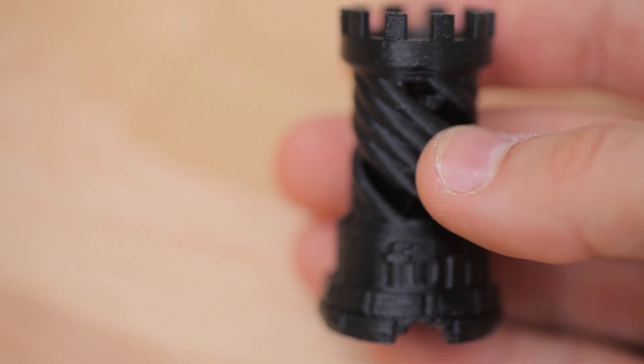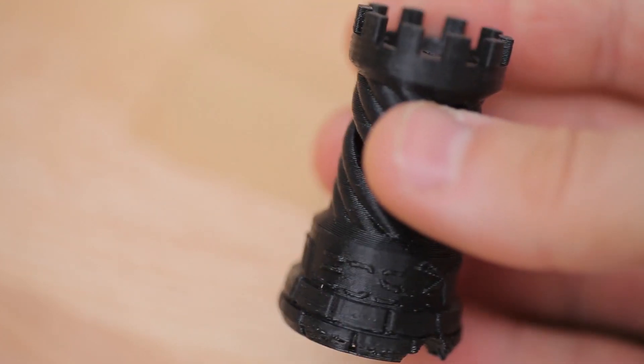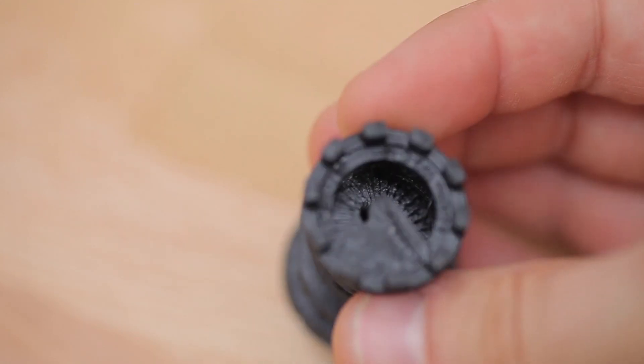Next up, a part printed from ABS on my Mendel 90. This is just cheap Chinese no-name ABS basically, and you can see right away that the font didn't turn out as great, neither did the Formlabs logo.